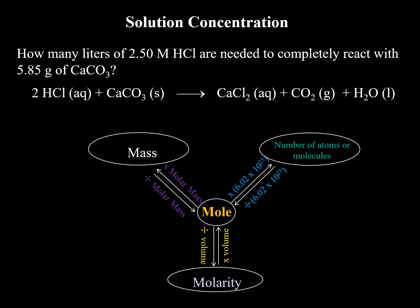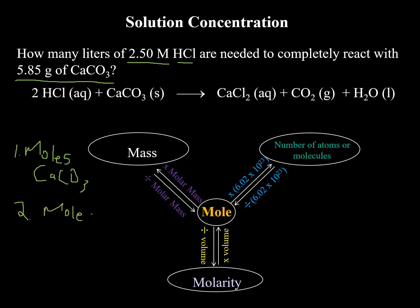Using the same roadmap: 2.5 molar of HCl is needed to completely react with 5.85 grams of calcium carbonate. How many liters are needed? First, find the moles of calcium carbonate by dividing by its molar mass — approximately 100 grams per mole. Then use the balanced chemical equation to find the moles of HCl.